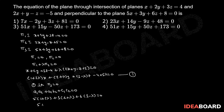Expanding: 5 + 10λ + 6 + 3λ + 18 − 6λ = 0, which implies 29 + 7λ = 0, therefore λ = −29/7.